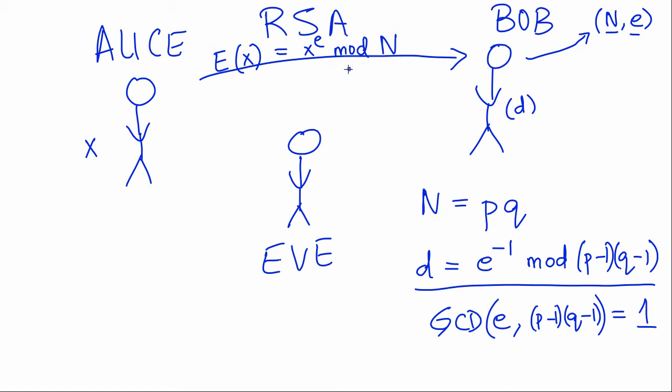This message could be seen by Eve along the way. When Eve sees X to the E mod N, we need to ensure that Eve cannot figure out the value of X, which is the message that Alice is trying to send Bob. The stability of RSA arises from the fact that if N is a product of two very large primes, then N cannot be easily factored into P and Q. So when Eve sees X to the E mod N, there's no way for her to easily figure out X.